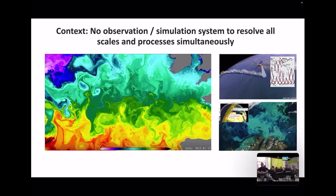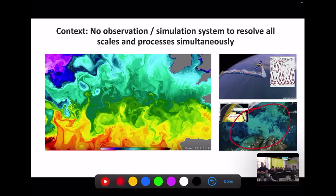On the right you have satellite observations — one for ocean color related to primary production, and another showing sea surface height measured from space. What's important is that from space you only observe the sea surface, and typically with very coarse and irregular sampling. Even on a daily scale, a satellite cannot cover all global oceans, so there are missing parts.